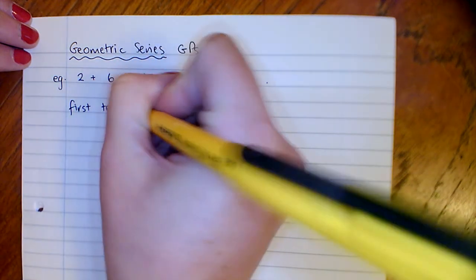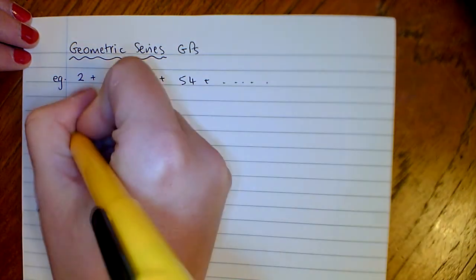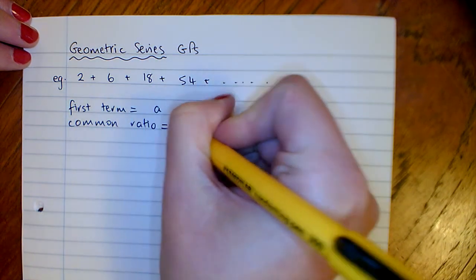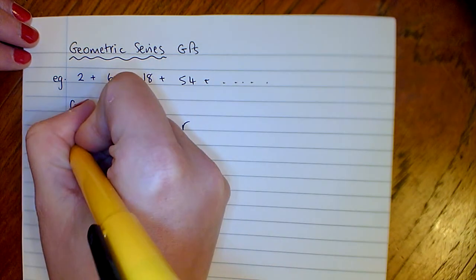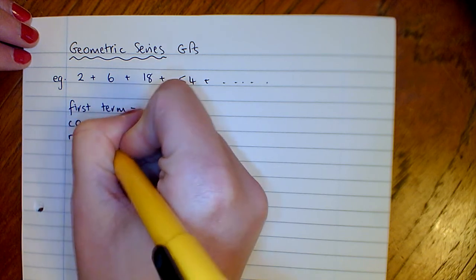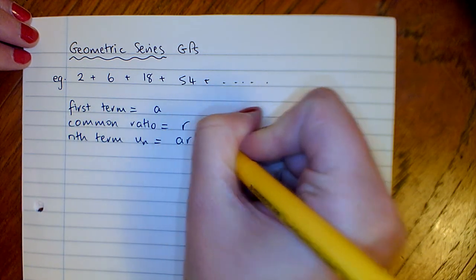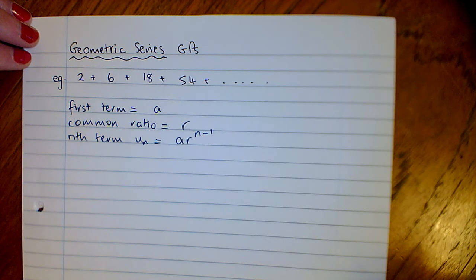We still have our first term as A. This time we have our common ratio as R, and our nth term is AR to the power of n minus 1.